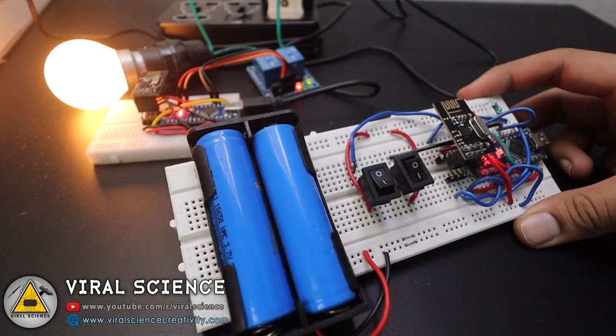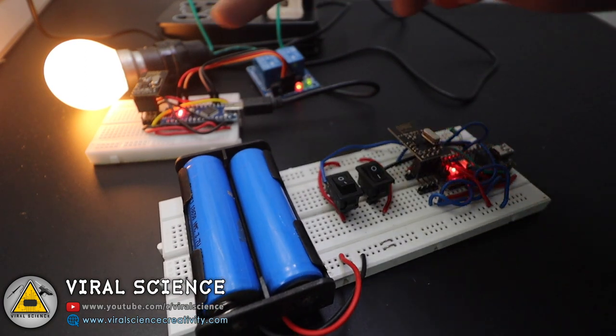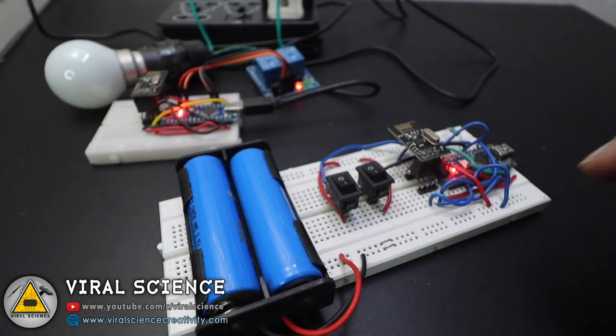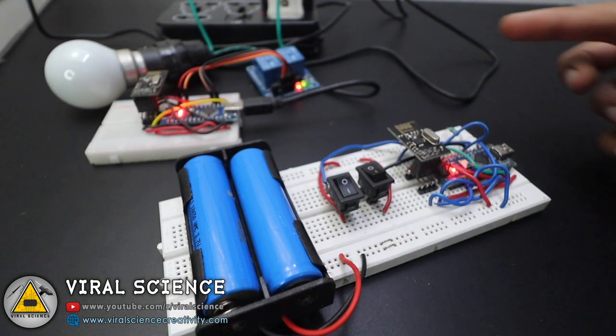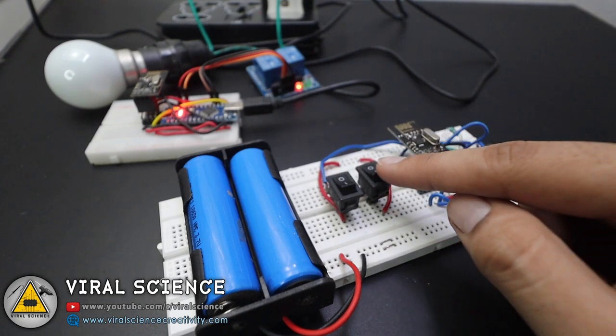As you can see, when I turn on the first switch, relay one turns on and it turns on the bulb as well. Now I'm turning on the second switch. I have not connected any bulb to it, but you can see the LED glows on the relay module.